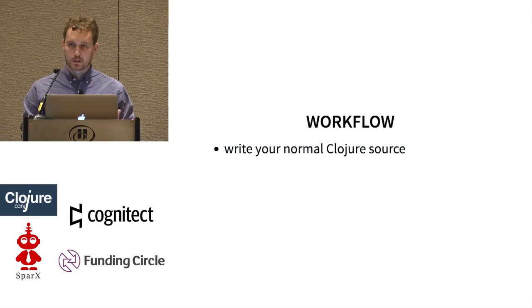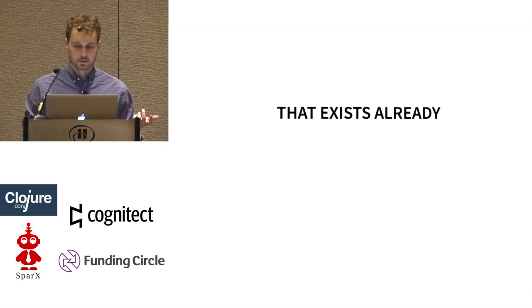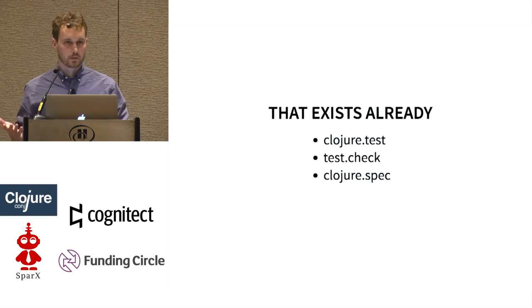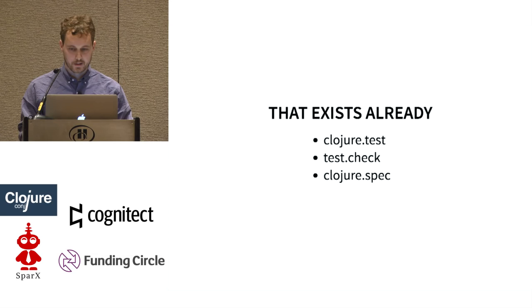The workflow: you write your normal Clojure source code, and then you write some more code to prove your code works. We already have that — it's called clojure.test, test.check, and clojure.spec. We're already used to this workflow of writing code and then writing more code to prove that it works. So this is just one more thing — nothing special about that.